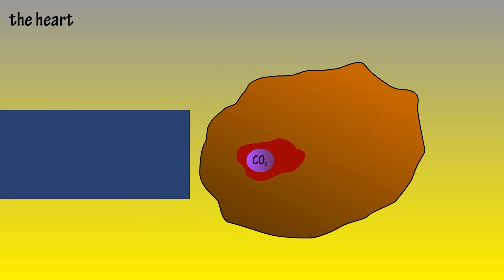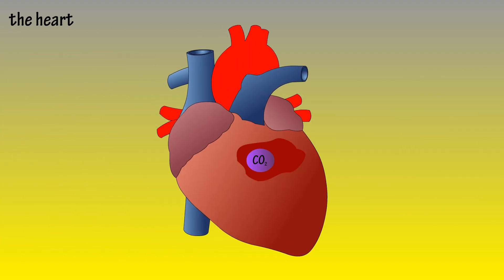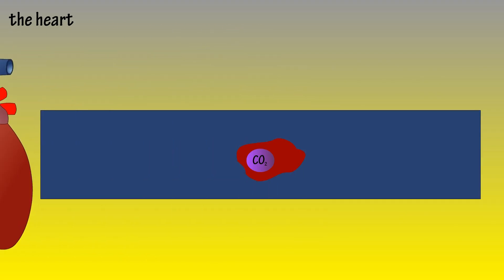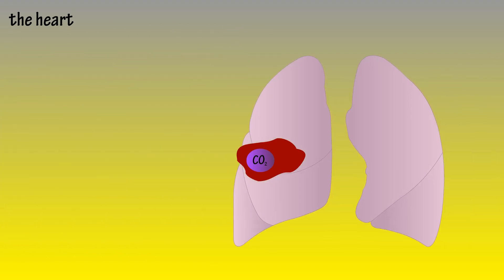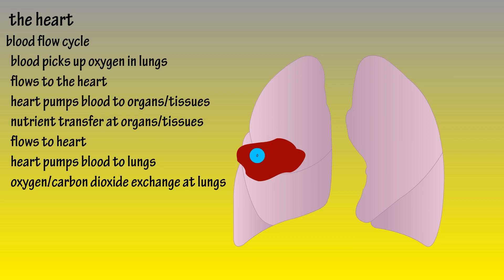The blood then flows back to the heart where it's pumped to the lungs. In the lungs, carbon dioxide is dropped off and oxygen is picked up, and the blood has completed its cycle — it will continue this cycle again and again.